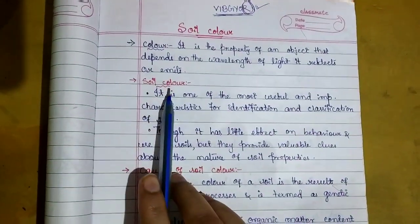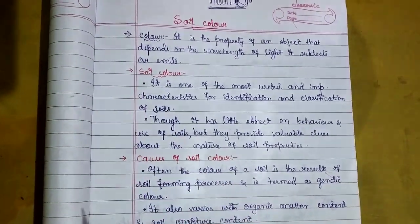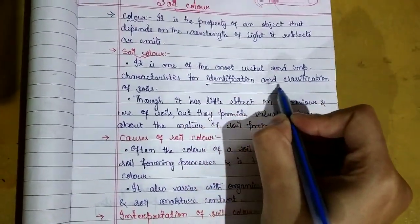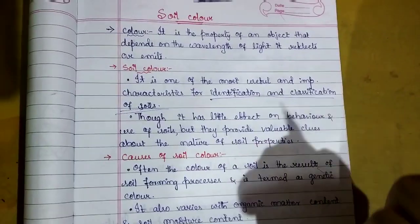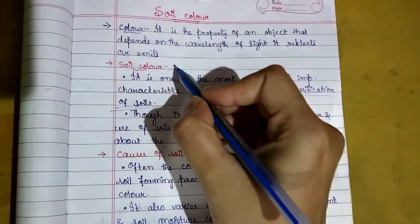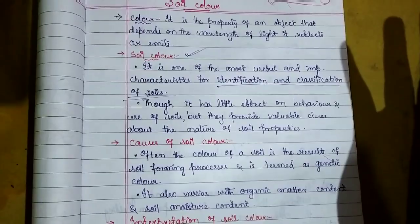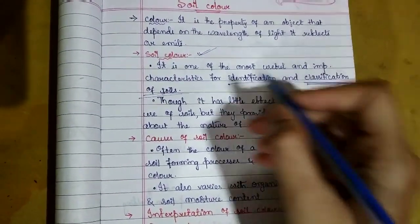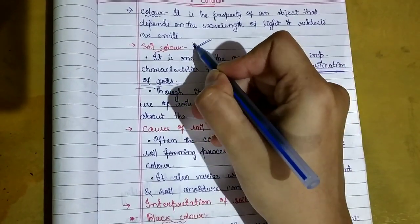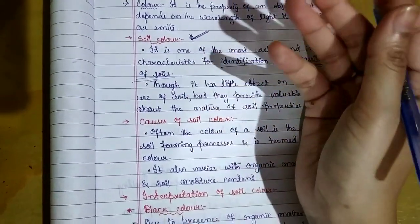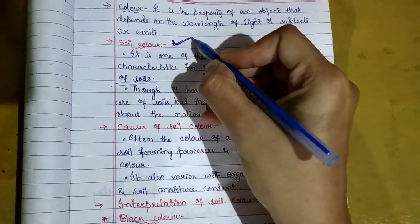Coming to soil color, why is it important to study? Because it is mainly useful for identification or classification of soil. We say this is red color, yellow color, or black color soil. Soil color is a physical property of soil among different properties like physical, chemical, and biological.